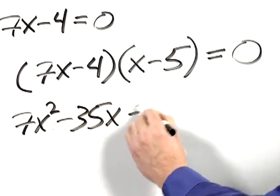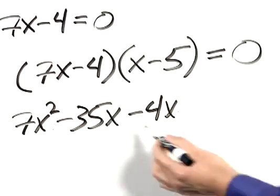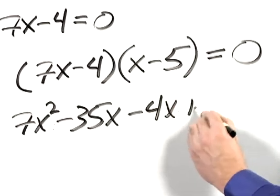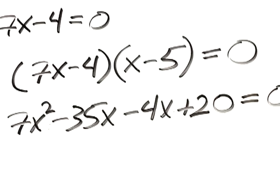Negative 4 times x is negative 4x. And negative 4 times negative 5 is positive 20. And that still equals 0.